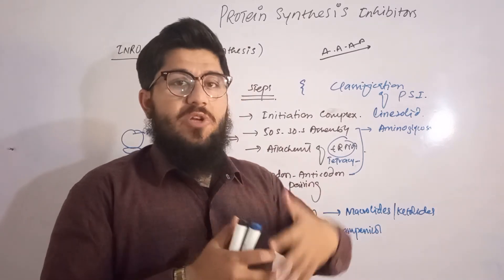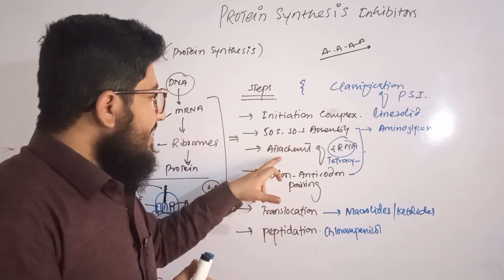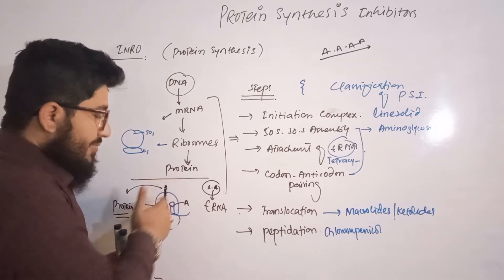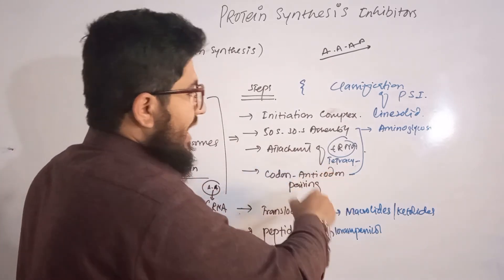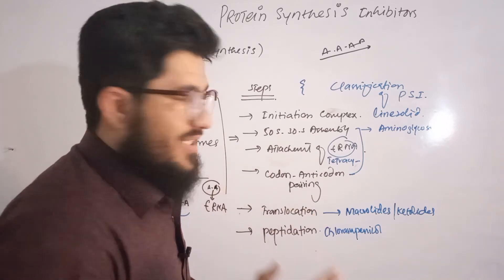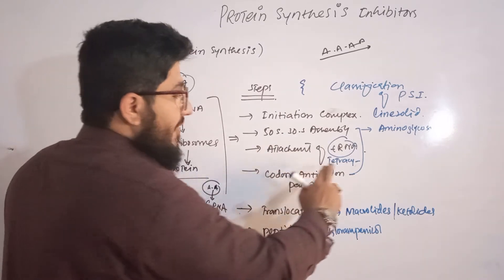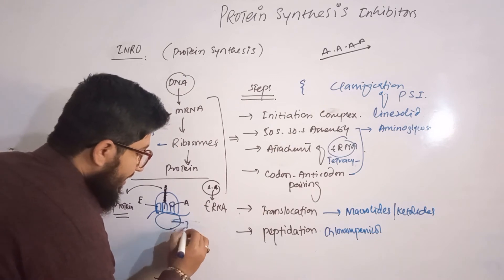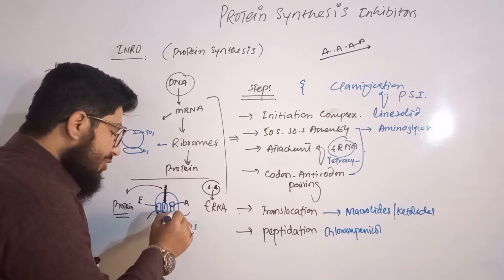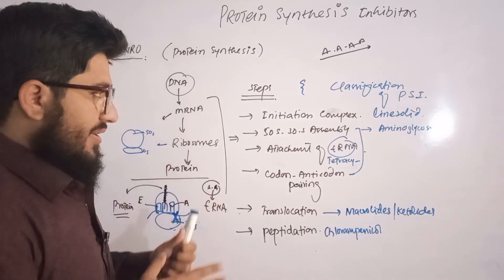The next step is attachment of the tRNA, and this can also be inhibited. Tetracyclines — including tetracycline, oxytetracycline, doxycycline, and minocycline — are responsible for inhibiting the attachment of the tRNA to the 30S subunit. According to the mechanism of action of tetracyclines, they inhibit the 30S unit, thereby blocking tRNA attachment at that site.